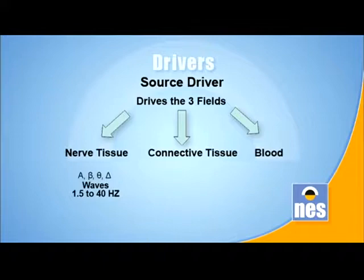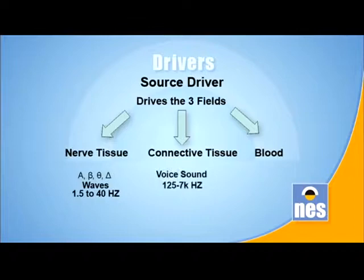A lot of the drivers we have developed work off sound. The nerve driver, for example, works off alpha waves, delta waves, beta waves, theta waves. The brain actually creates waves between 4 Hz and 48 Hz because it needs to power the nervous system. The lung driver is another really interesting driver because we all make sounds and we can energise our bodies by doing so - we can make humming noises, singing noises, talking noises. For speech, it's 125 Hz to about 7,000 Hz.